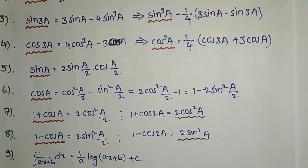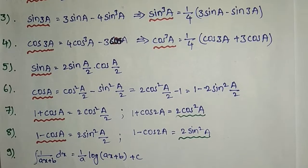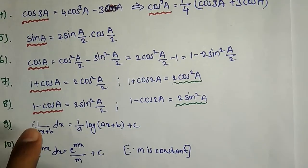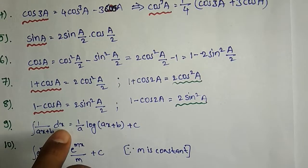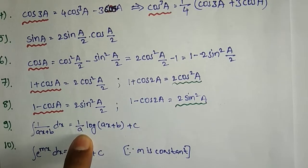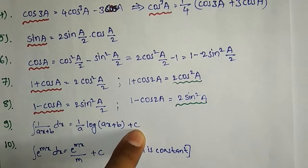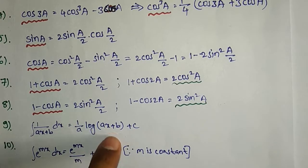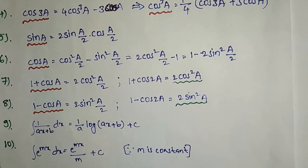Next is the integration formula. The integration of 1/(ax+b) dx is equal to 1/a · log|ax+b| plus C.